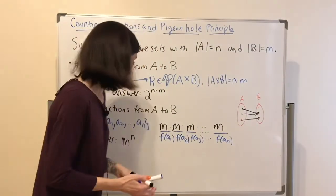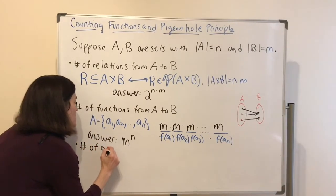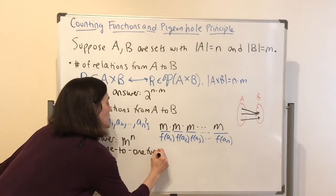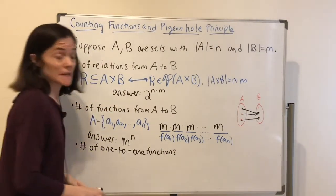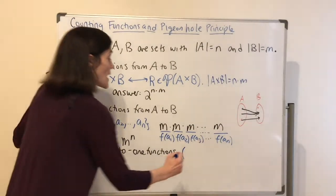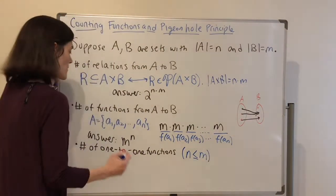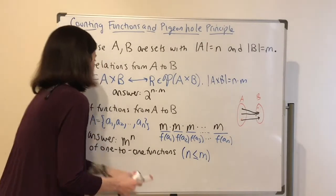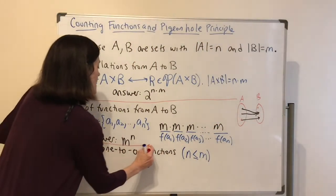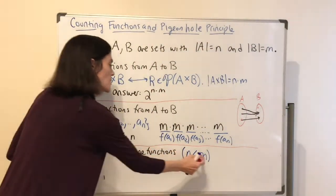One more thing we will count before stating the Pigeonhole Principle is the number of one-to-one functions. For this, I need to assume that the cardinality of A is strictly less than or equal to the cardinality of B. We will count one-to-one functions and you'll see why this assumption is needed.